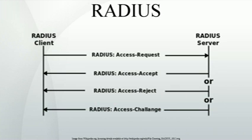Accounting is described in RFC 2866. When network access is granted to the user by the NAS, an accounting start — a RADIUS accounting request packet containing an ACCT status type attribute with a value of 'start' — is sent by the NAS to the RADIUS server to signal the start of the user's network access. Start records typically contain the user's identification, network address, point of attachment, and a unique session identifier. Periodically, interim update records — a RADIUS accounting request packet containing an ACCT status type attribute with a value of 'interim update' — may be sent by the NAS to the RADIUS server to update it on the status of an active session. Interim records typically convey the current session duration and information on current data usage.